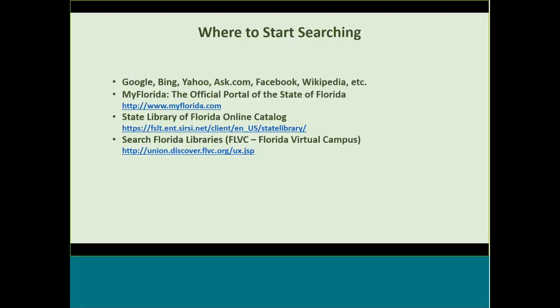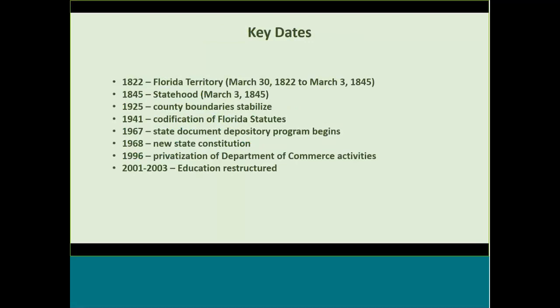Where do we start searching? A lot of people will search their favorites if they know what they're looking for — that's one of the things, just knowing what to look for. Then you can go to Google, Bing, Wikipedia, or some other source. These are three sources I would go to next, and I'm going to go into more detail on each: MyFlorida.com, the State Library of Florida online catalog, and the shared academic catalog for state universities and colleges in Florida.